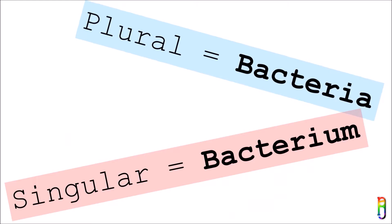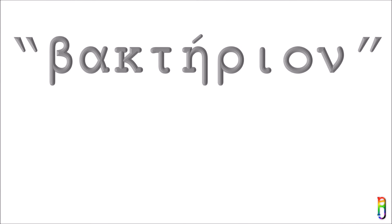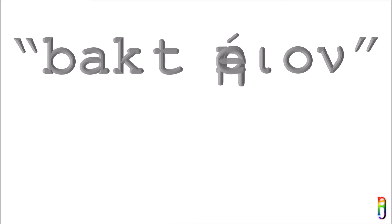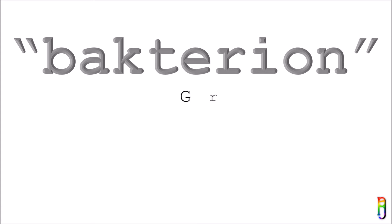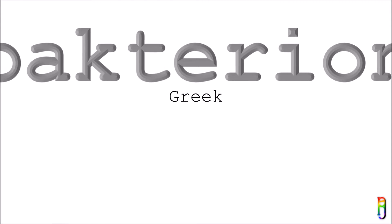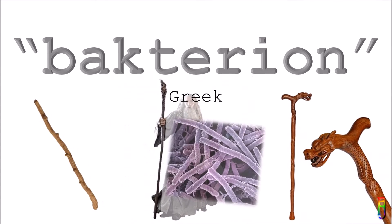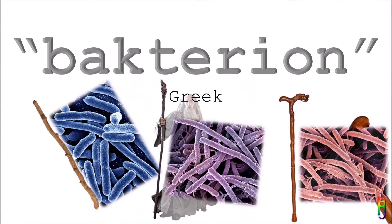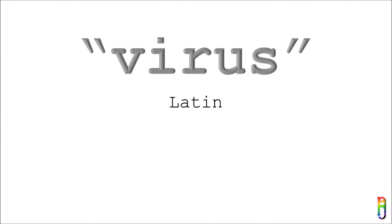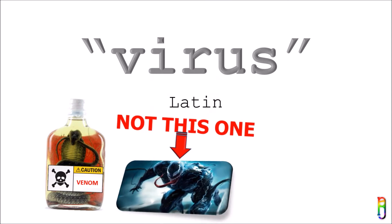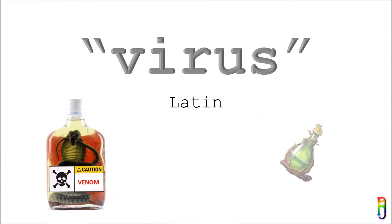'Bacteria' is the plural of the Latin word 'bacterium,' which originated from the Greek word 'bacterion,' meaning a small stick, a staff, or a cane — since the first discovered bacteria had that shape. 'Virus,' on the other hand, did not change from its original Latin form and spelling. It came from a Latin word which means venom or a poisonous liquid.